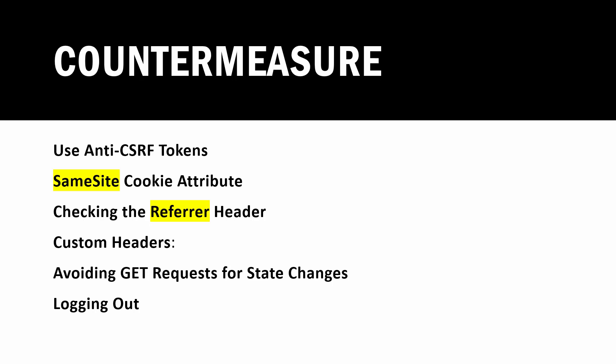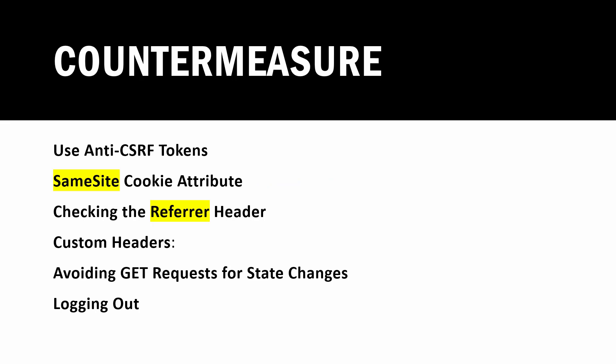One of the most important countermeasures is the same-site cookie attribute. This setting can be added in the HTTP cookie to control cross-domain behavior. The primary goal is to mitigate the risk of cross-origin information leakage and provide protection against CSRF attacks. In strict mode, the cookie will only be sent in requests originating from the same site where it was set. This is the most restricted usage available.